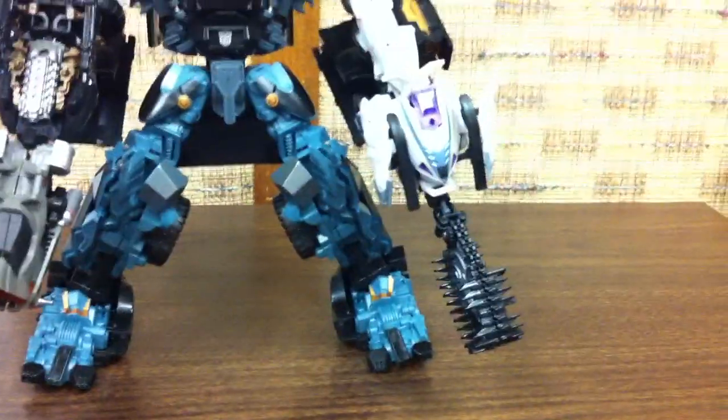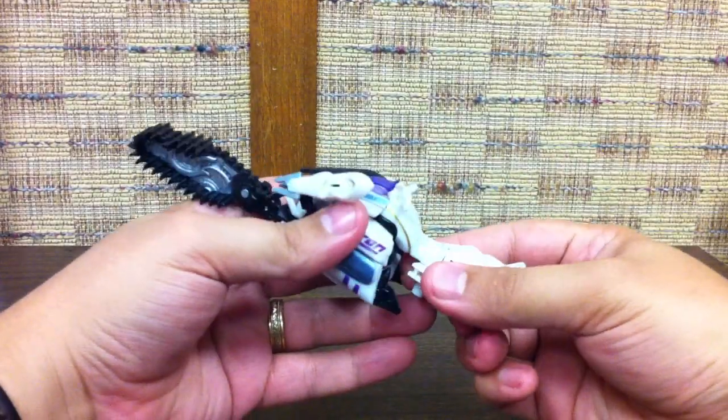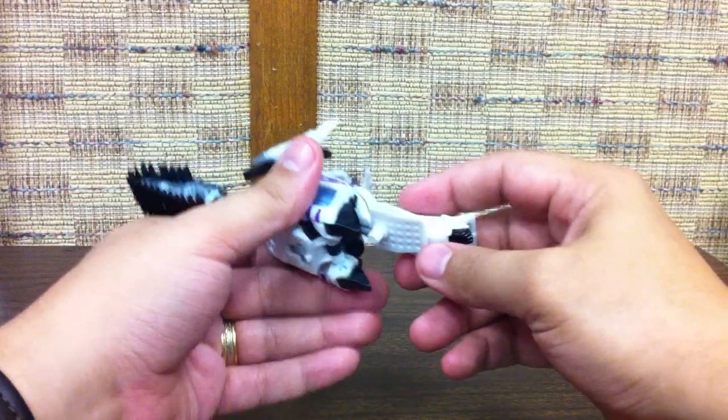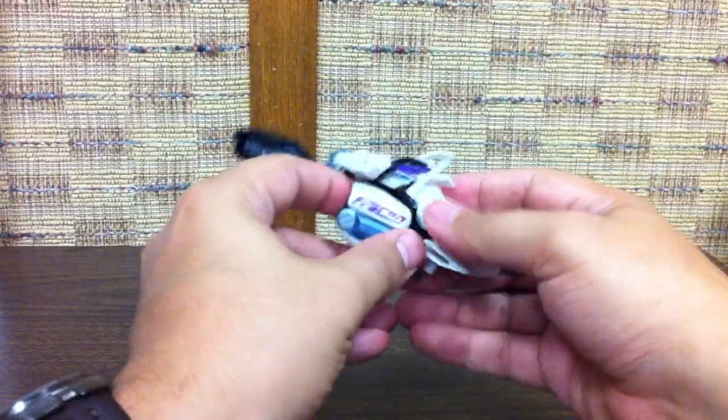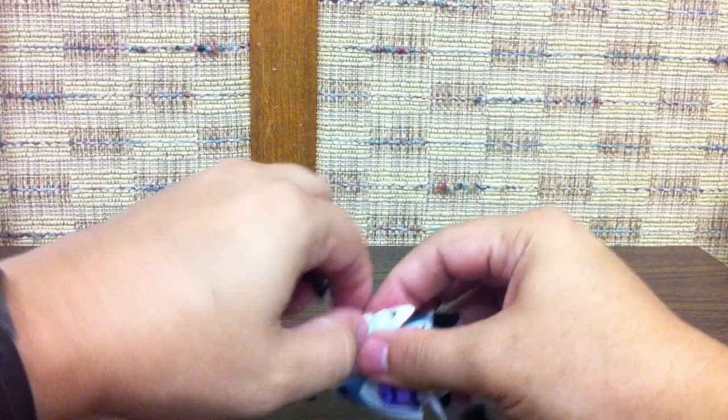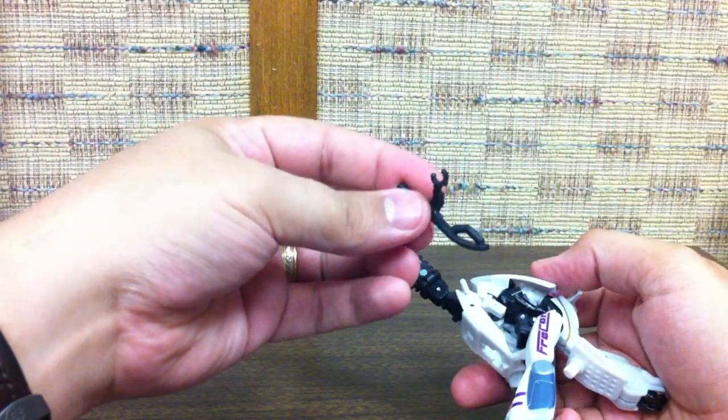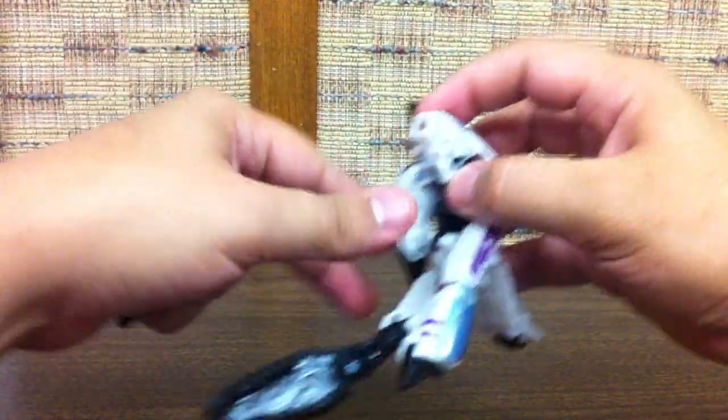Then you get to robot mode. You just want to come around here. Go ahead and flip this. Actually, leave this flipped up like that because it's going to work out better in robot mode that way. Bring the legs down here just like this. Go ahead and detach the weapons—you don't want to detach the whole ski, just the weapons. But the skis do just clip on. You could conceivably use these as clip-on weapons too. These weapons do work with the clip system on a lot of the Revenge of the Fallen Reveal the Shield figures.